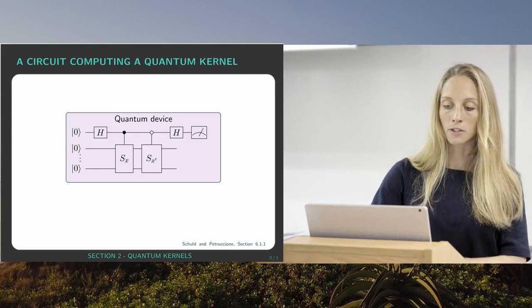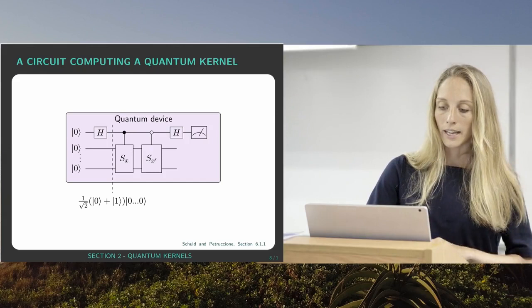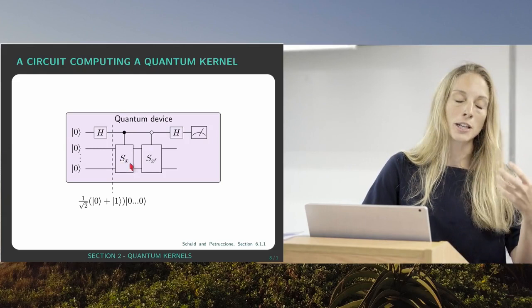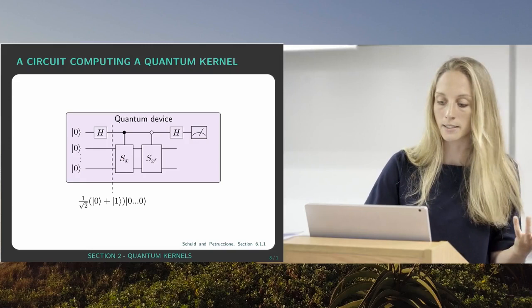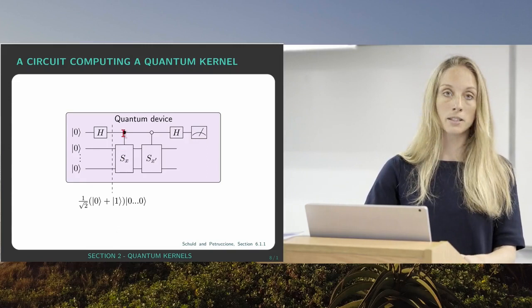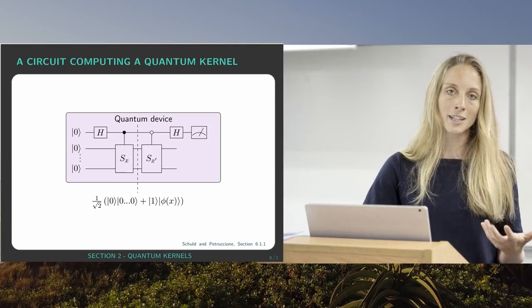And now whatever our quantum circuit that actually embeds or encodes the input into a quantum state looks like, we just call it here Sx. We condition this routine on the ancilla being in state 1. So basically now our quantum feature vector that encodes the input x is now entangled with the ancilla being in state 1.